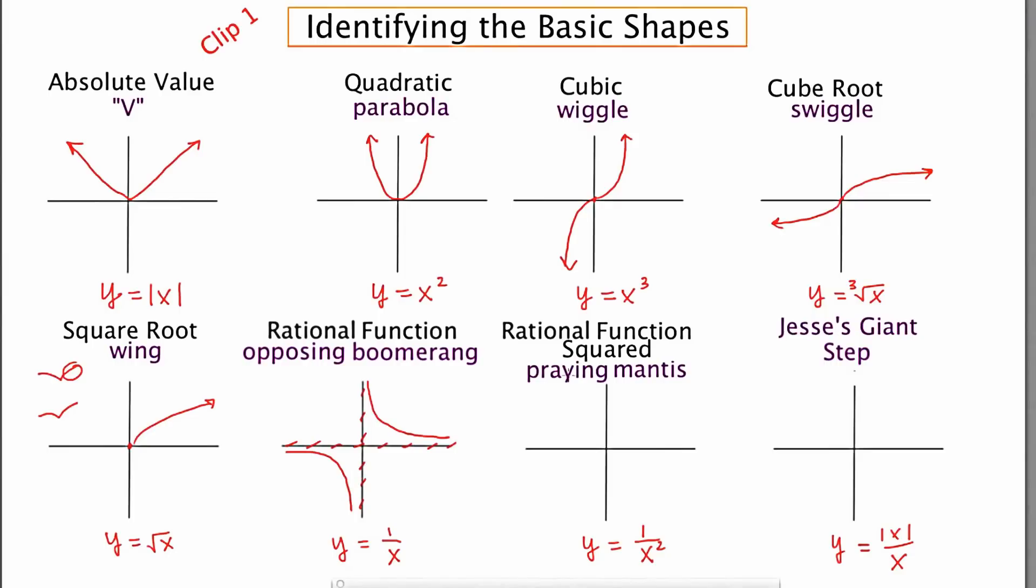Rational function squared, again has the asymptotes on the axes, like so. And we nickname it a praying mantis, which is that insect whose little arms look like they're praying. So you have to have a little bit of an imagination. But that makes these a little bit more memorable if you have a nickname for them. These arrowheads aren't essential, but I felt like I left it off so I needed to be thorough.